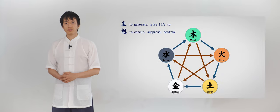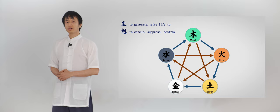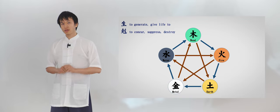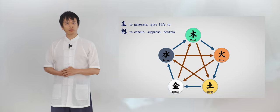And then we look at the conquering or destruction cycle. Starting from the obvious, we know that water will suppress fire. Fire melts gold or metal and metal can chop wood and wood would hold the earth. Earth will absorb water. And here you see the two complete relationships defining how the energies interact.